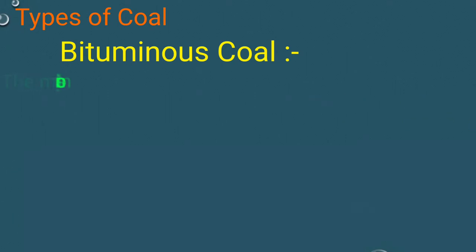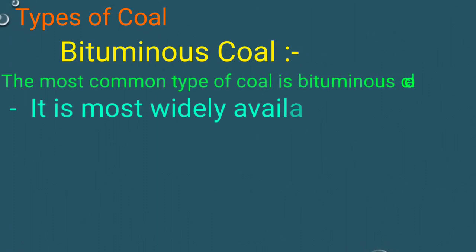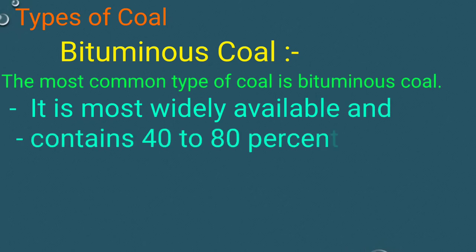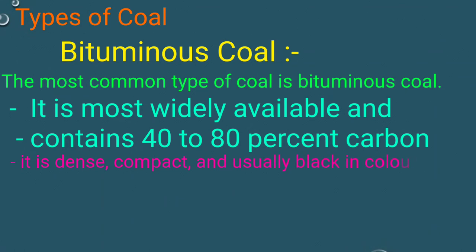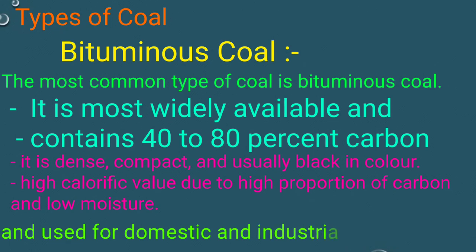The most common type of coal is bituminous coal. It is most widely available and contains 40 to 80 percent carbon. It is dense, compact, and usually black in color. It has a high calorific value due to the high proportion of carbon and low moisture, and is used for domestic and industrial purposes.